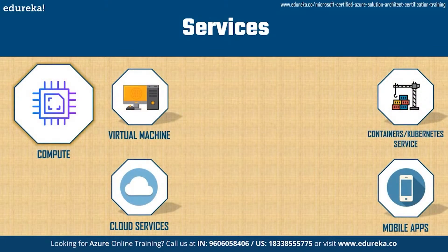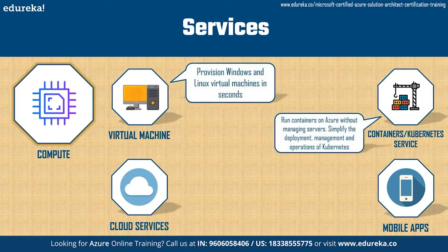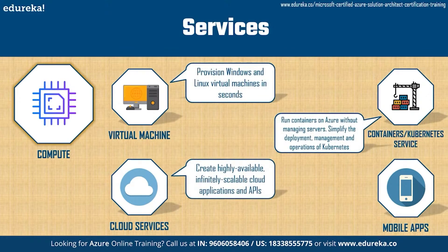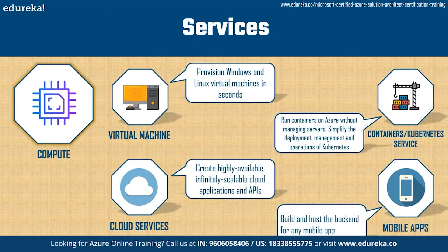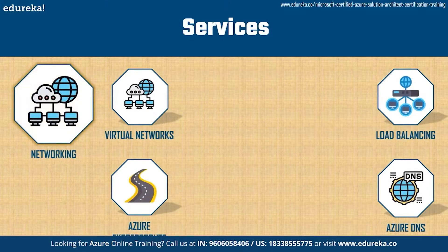The first product John needs is Compute. He can use this to deploy and manage virtual machines, containers, and batch jobs, as well as support remote application access. Compute resources can be configured with either public or private IP addresses depending on whether the resource needs to be accessible to the outside world. Services within compute include virtual machines, containers, Kubernetes service, cloud services, and mobile apps.